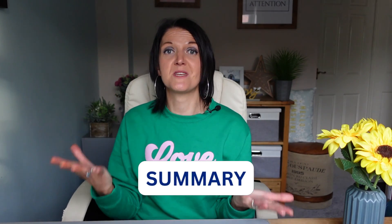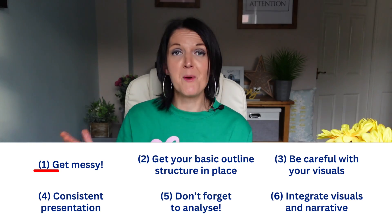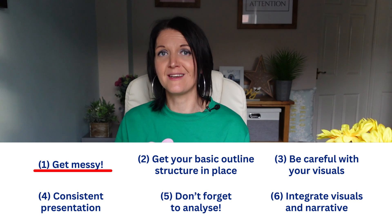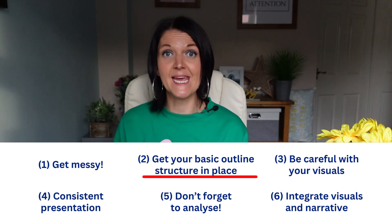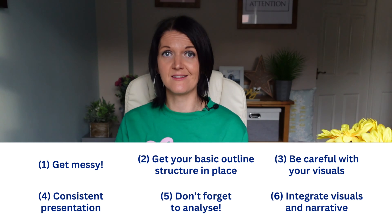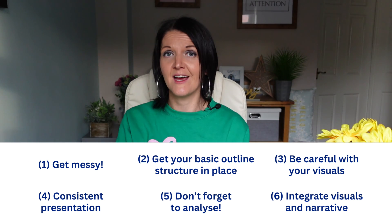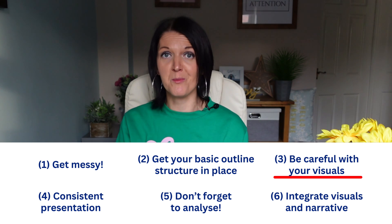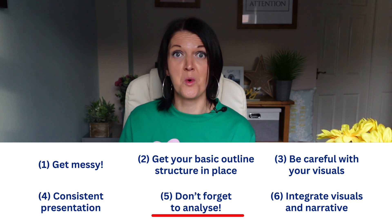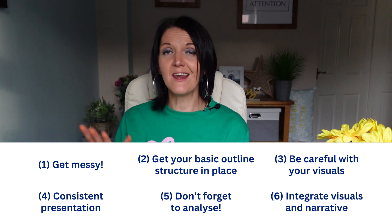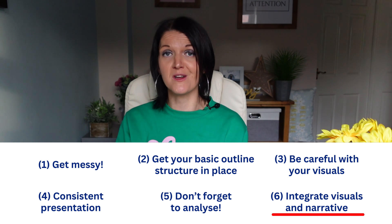So there you have it — six top tips for ensuring that your quantitative findings chapter is absolutely marvellous. To recap: firstly, be prepared for a bit of mess and chaos — you are not going to get your findings chapter right the first time, and that's perfectly normal. Secondly, develop a basic provisional outline structure, beginning with the descriptive statistics and then moving to more complex analysis, using your research questions or hypotheses to create an initial outline. Thirdly, use the most appropriate visuals to represent your data. Fourthly, be consistent in how you are presenting them. Fifthly, don't just describe your data — make sure you are analysing it too. And last but not least, ensure that all of your visual representations are referred to somewhere within your text. I hope you found this helpful, and be sure to check out the other videos in the series.